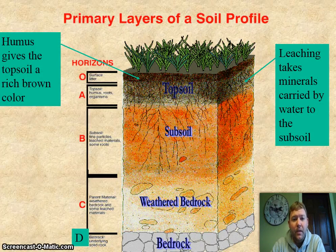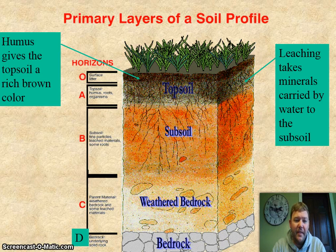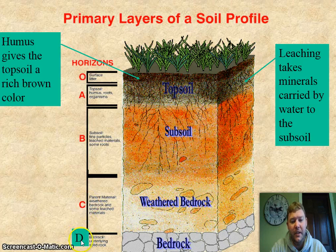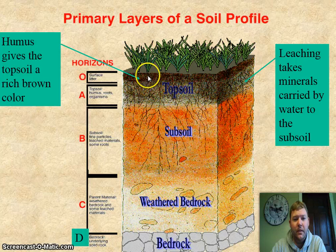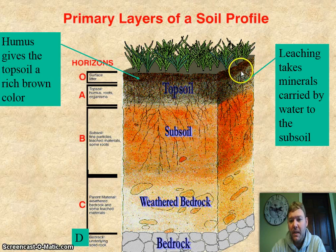Now let's talk about the layers of soil. There are five main layers: O, A, B, C, and R — this should say R, not D. Humus gives topsoil its rich brown color up in the very top area, and leaching carries minerals down through the different soil layers.